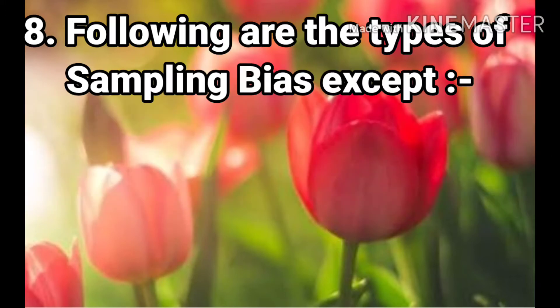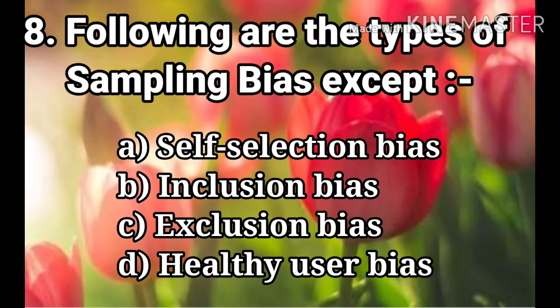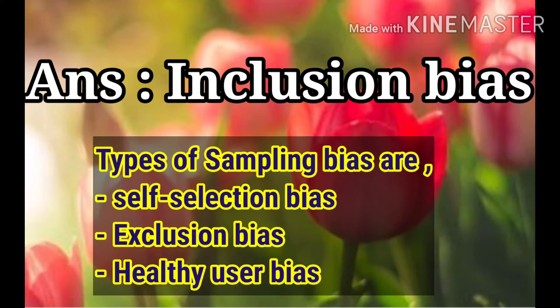Question 8: Following are the types of Sampling Bias except. The options are Self-Selection Bias, Inclusion Bias, Exclusion Bias, and Healthy User Bias. The answer is Inclusion Bias. The types of Sampling Bias are Self-Selection Bias, Exclusion Bias, and Healthy User Bias.